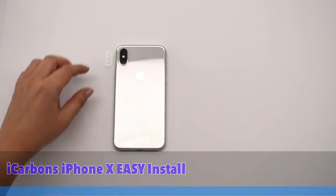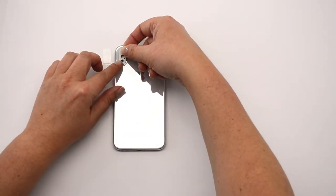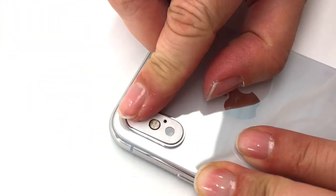In this video, we are installing an iCarbon's Rally Tilt skin for the iPhone X. We are going to start by installing the camera skin, which is an easy lineup of holes.